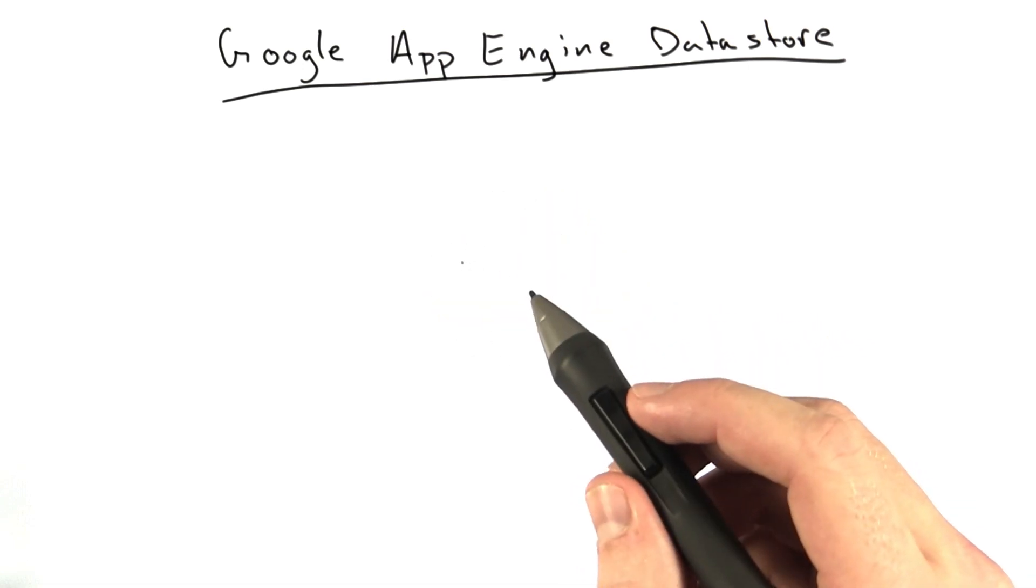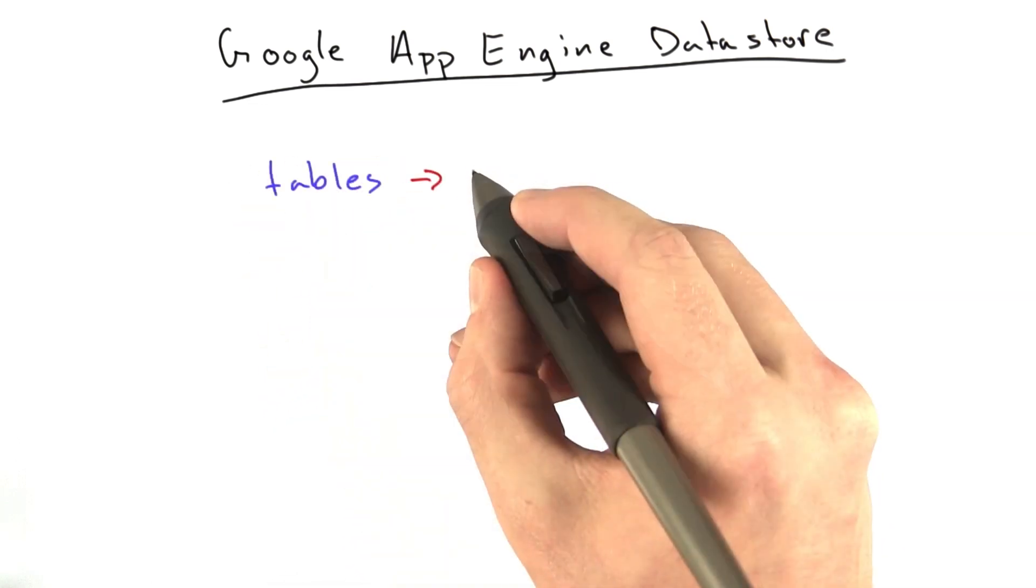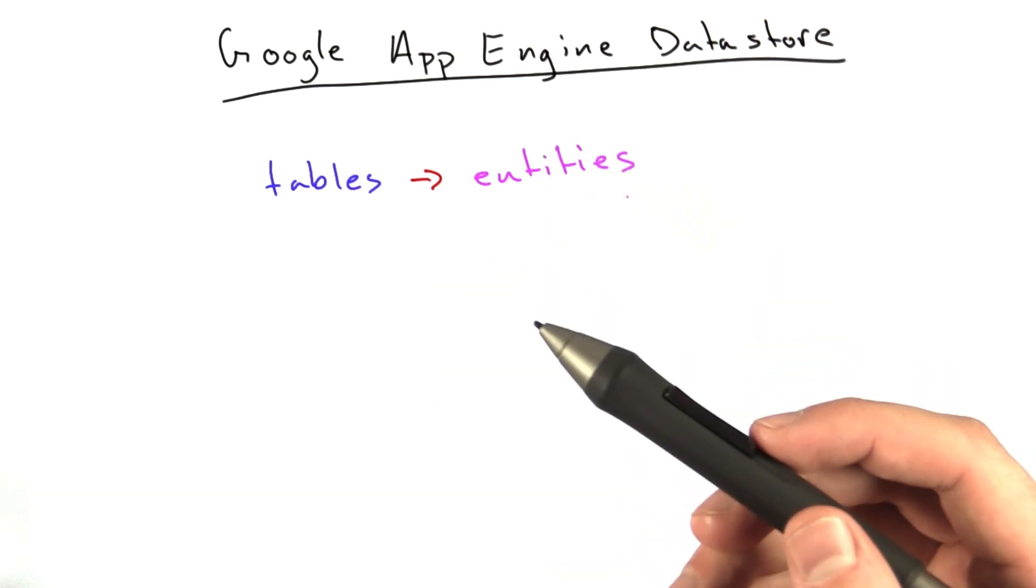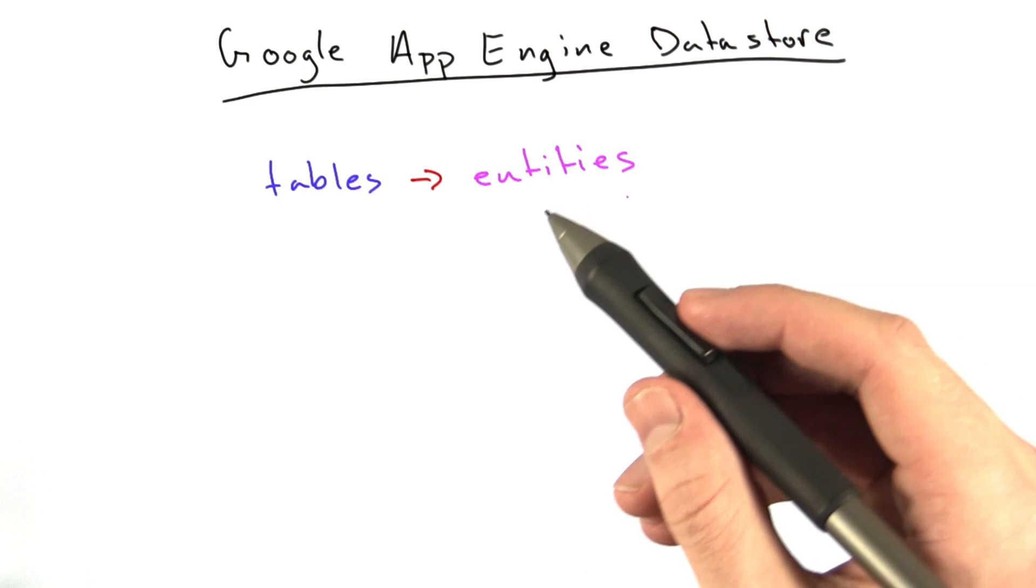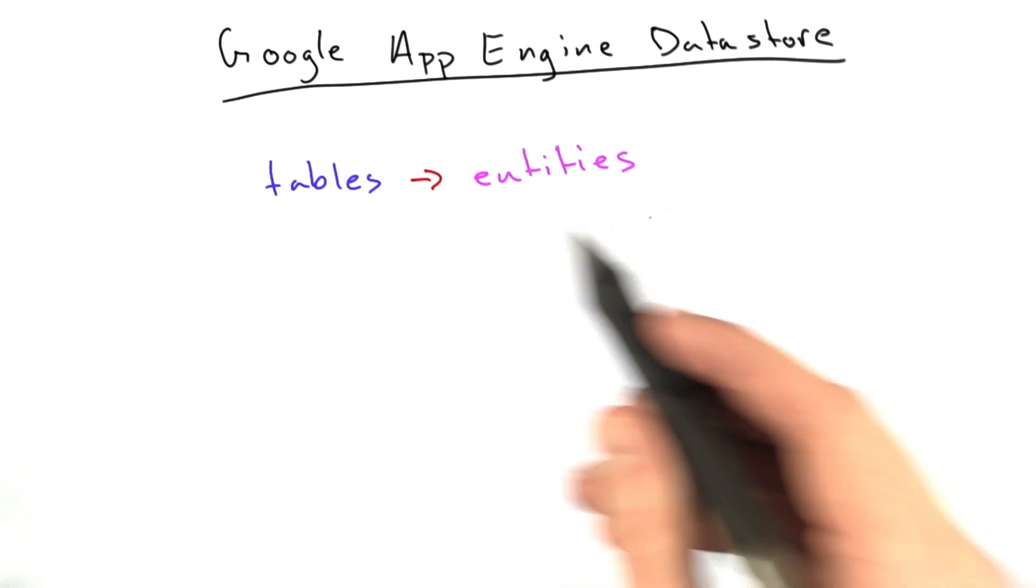A couple things worth pointing out. What we've been referring to as tables are known as entities in the Google App Engine Datastore. They serve basically the same purpose, which is how you organize things of the same data type together.